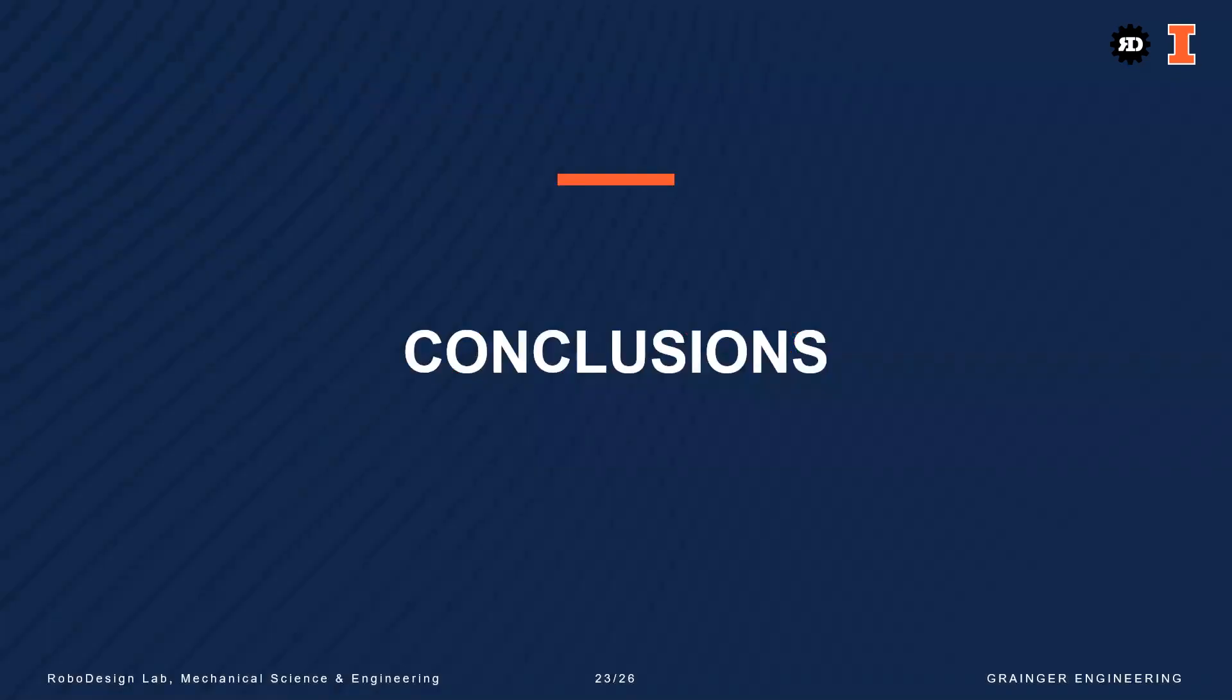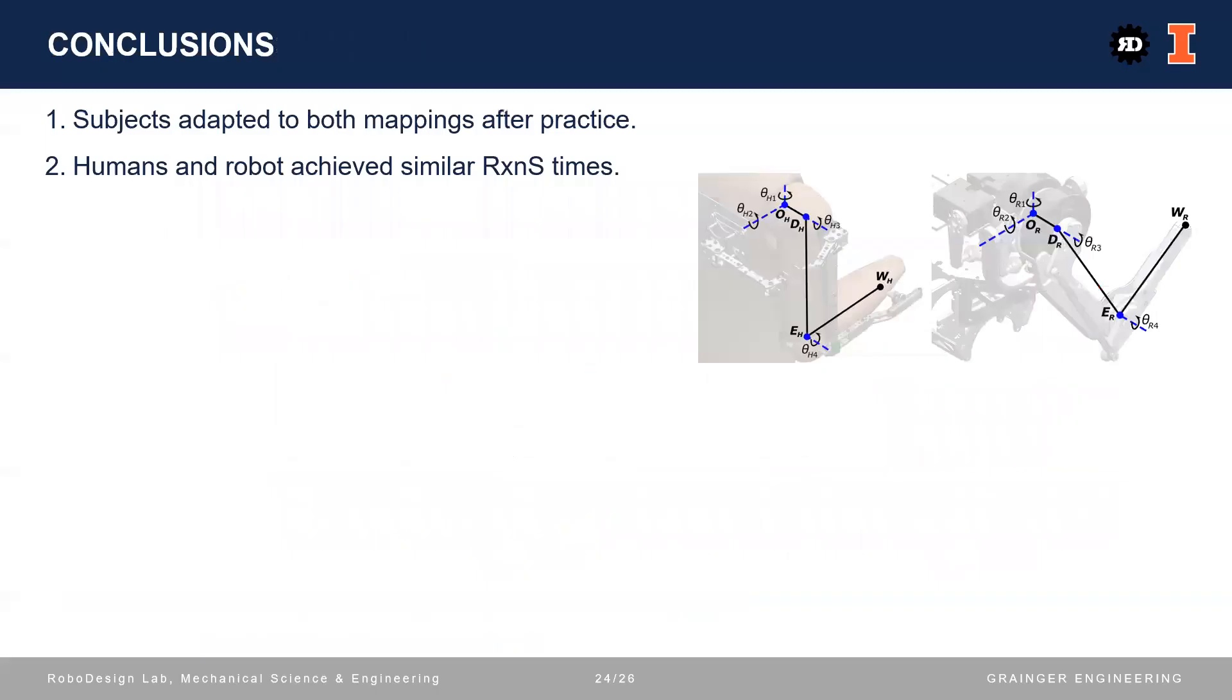We now summarize the conclusions. First, all subjects adapted to both mappings after sufficient practice. Second, the humans and the robot achieved similar single-target reaction times after the adaptation. These results were obtained even though the humans and the robot have different link length ratios and that the teleoperation was unintuitive.